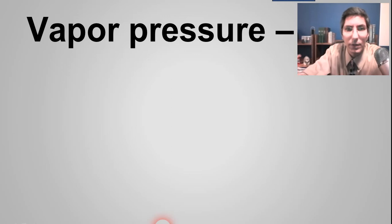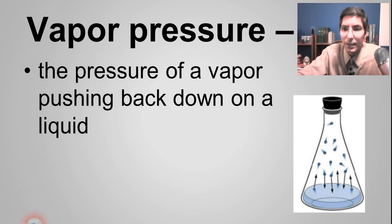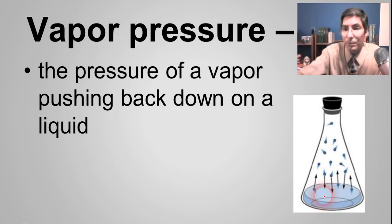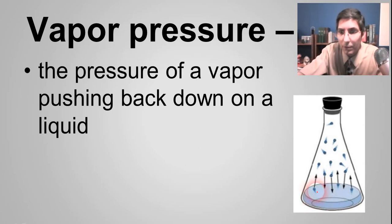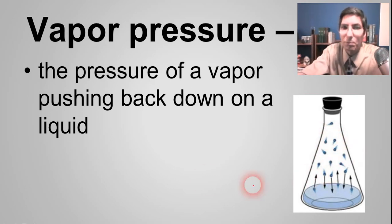The first characteristic of a liquid is its vapor pressure. Vapor pressure is the pressure of a vapor or a gas that pushes back down on a liquid. If we look at this picture, there's a liquid in this flask and we've put a stopper on it, so this is a closed system. Some of that vapor escapes the liquid — evaporation takes place — and those vapor particles push back down on the liquid. That's what we call vapor pressure.